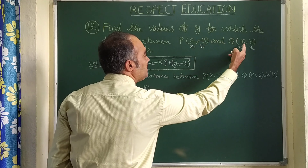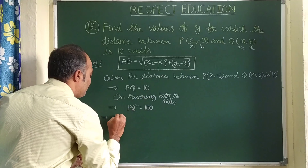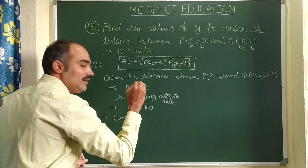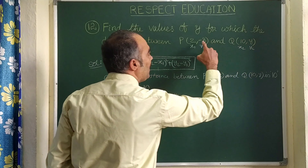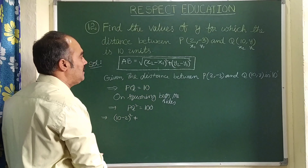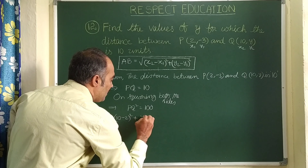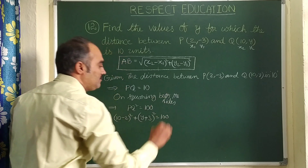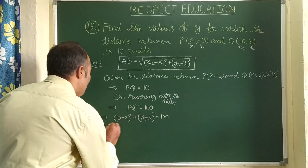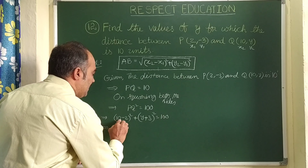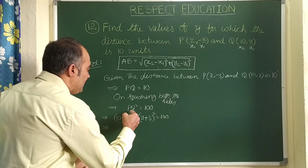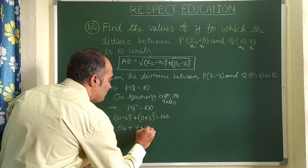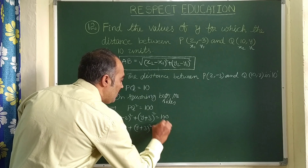x2 - x1 means (10 - 2)² plus y2 - y1 means y - (-3), so y + 3. It is (y + 3)² = 100. Let us simplify: 10 - 2 is 8, and 8² is 64. So 64 + (y + 3)² = 100.